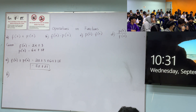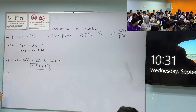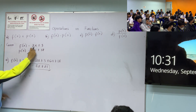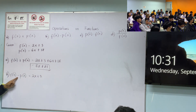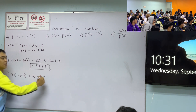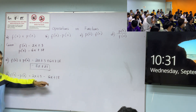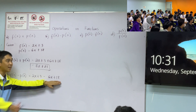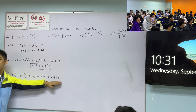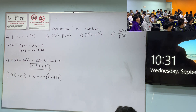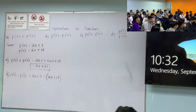For letter b, subtraction. We have f(x) minus p(x). Copy f(x) as 2x + 3, then minus p(x). But wait — do we write 6x + 18 directly? No. What should we do first? We need to open and close parentheses. Why?